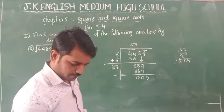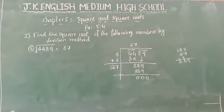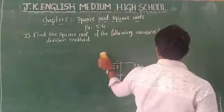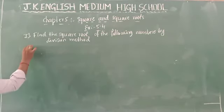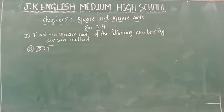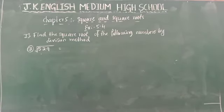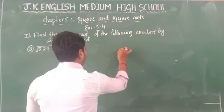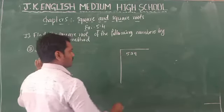Now there is one more question, and this is a 3-digit number. The 3-digit number is 529. We have already solved 4-digit numbers. Now let's solve this one. Write 529 and make the groups: the first group is 29 and the second group is 5.